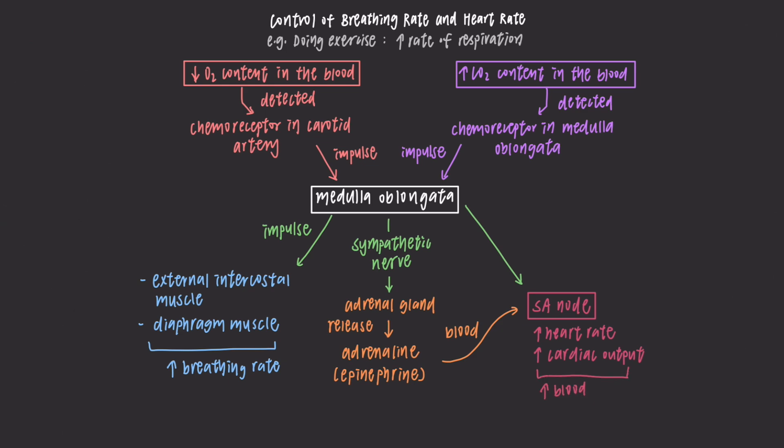This increases the blood pressure, which is detected by baroreceptors in the carotid artery. The receptor then sends an impulse back to the medulla oblongata through the vagus nerve in order to slow down the heart rate and cardiac output. This is the negative feedback mechanism.